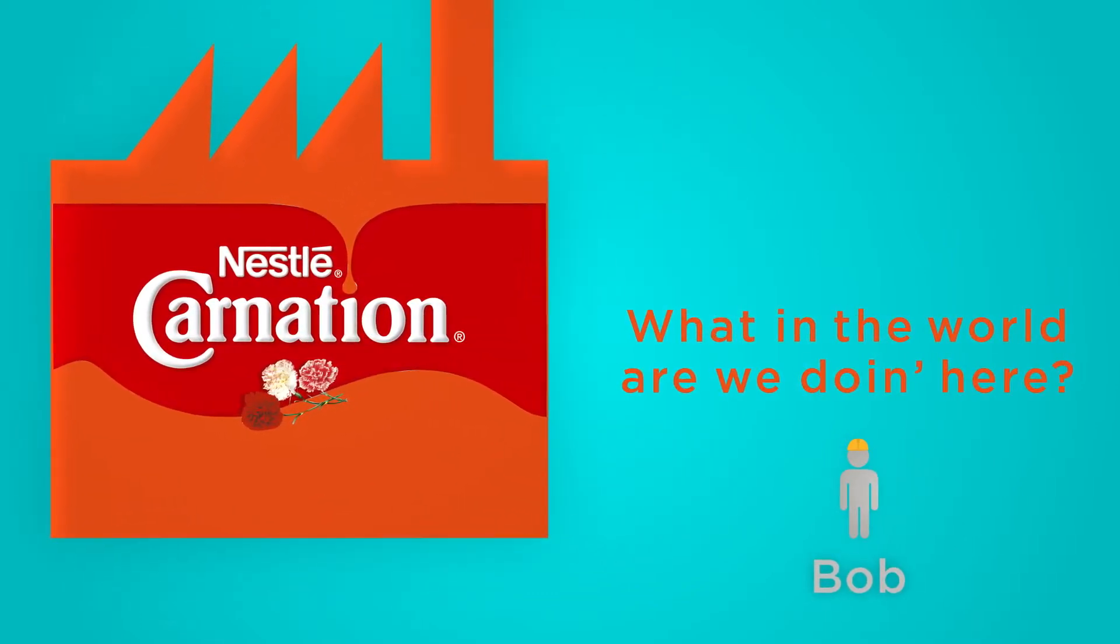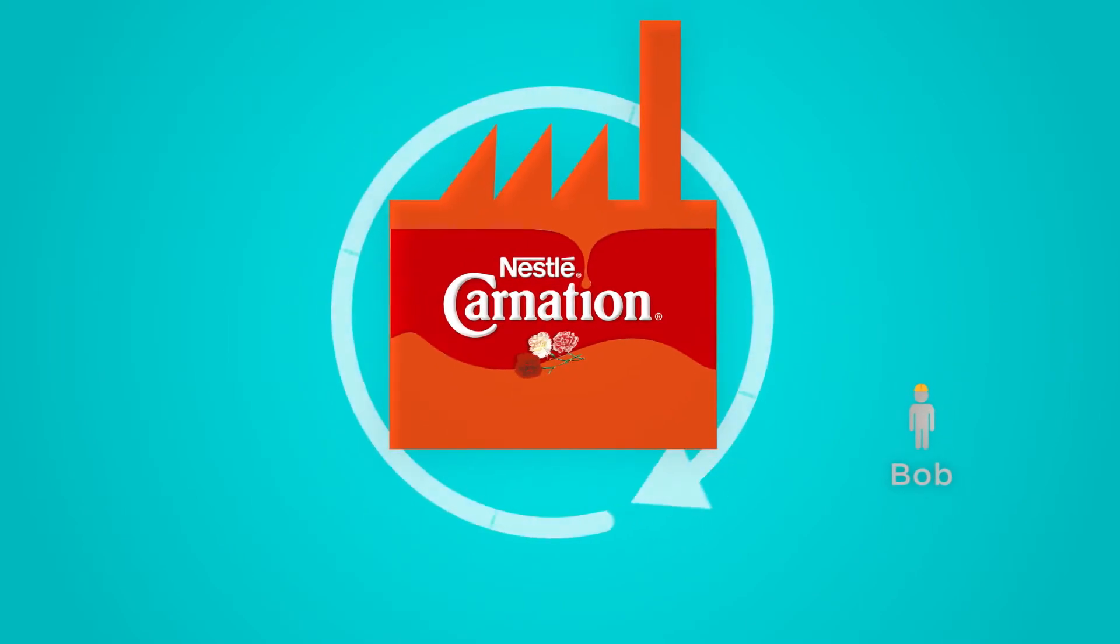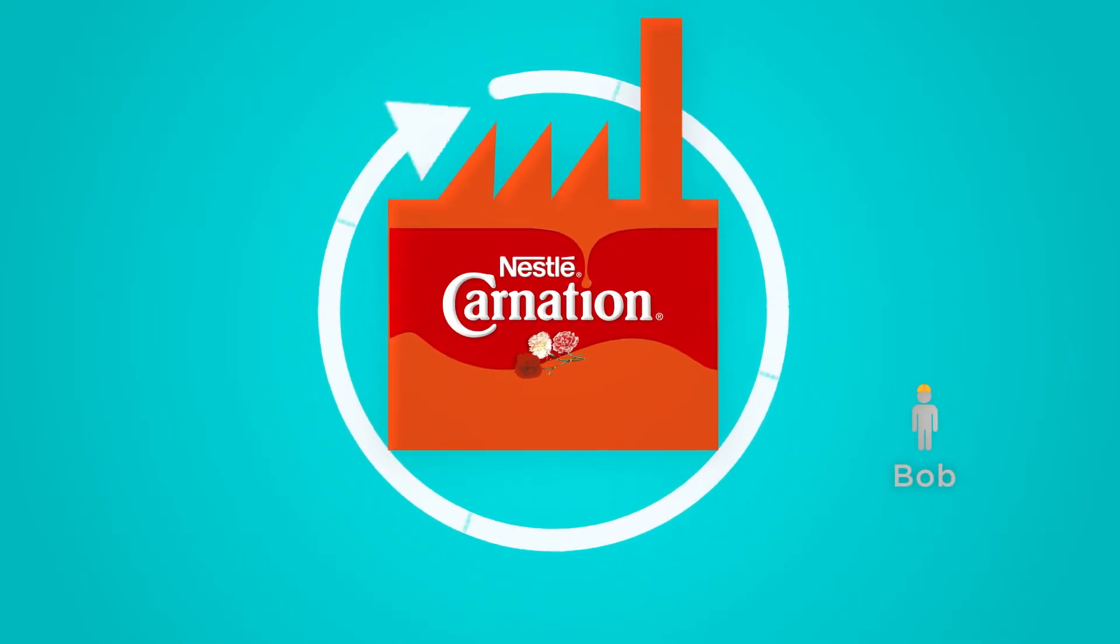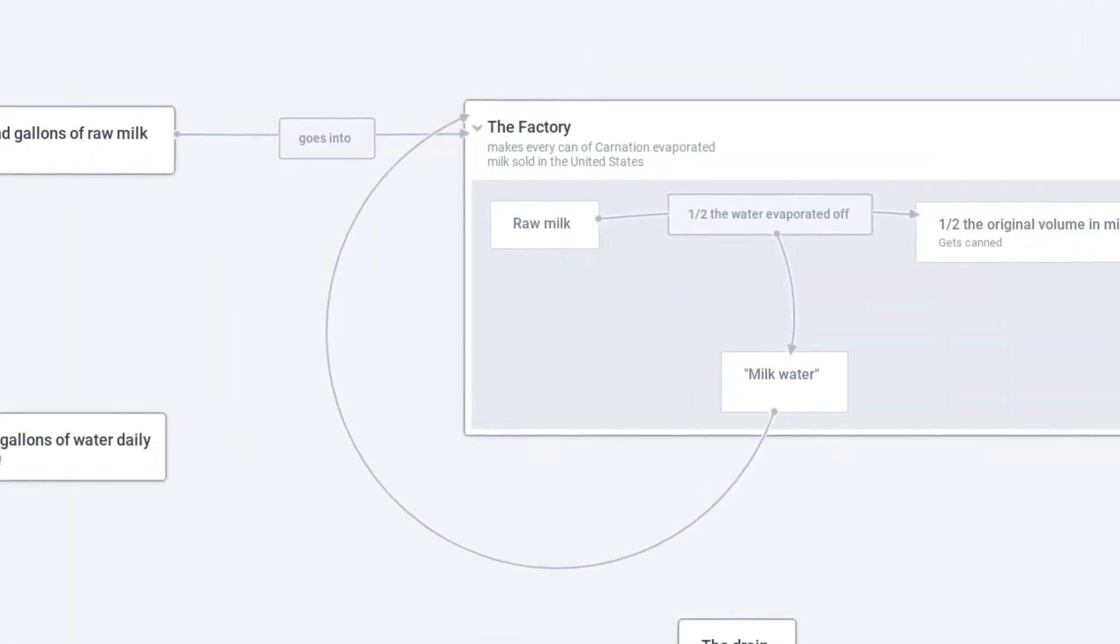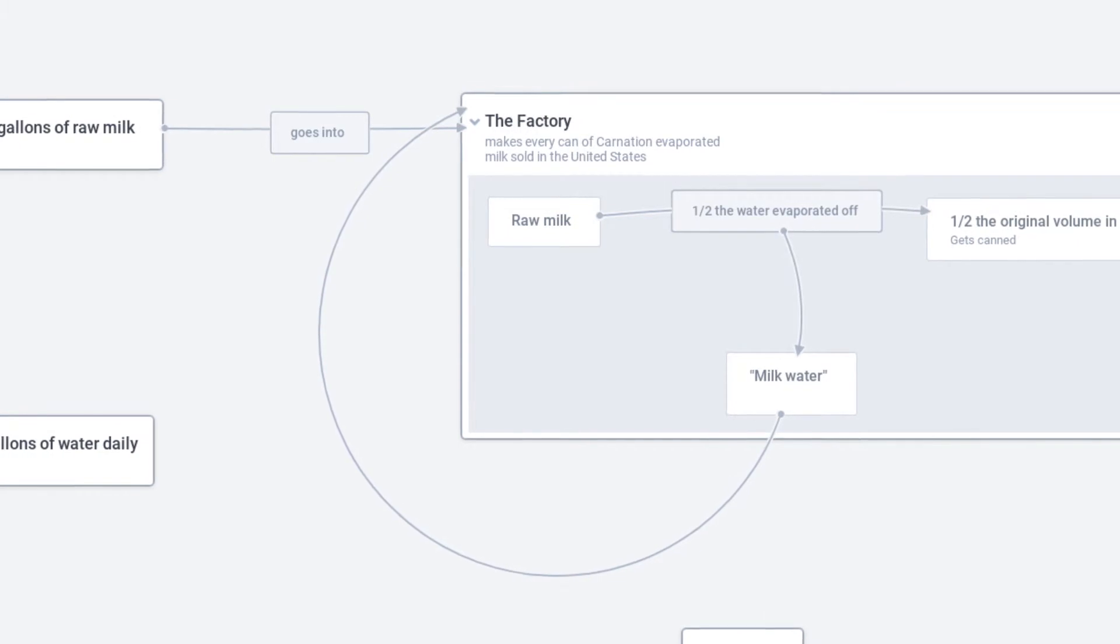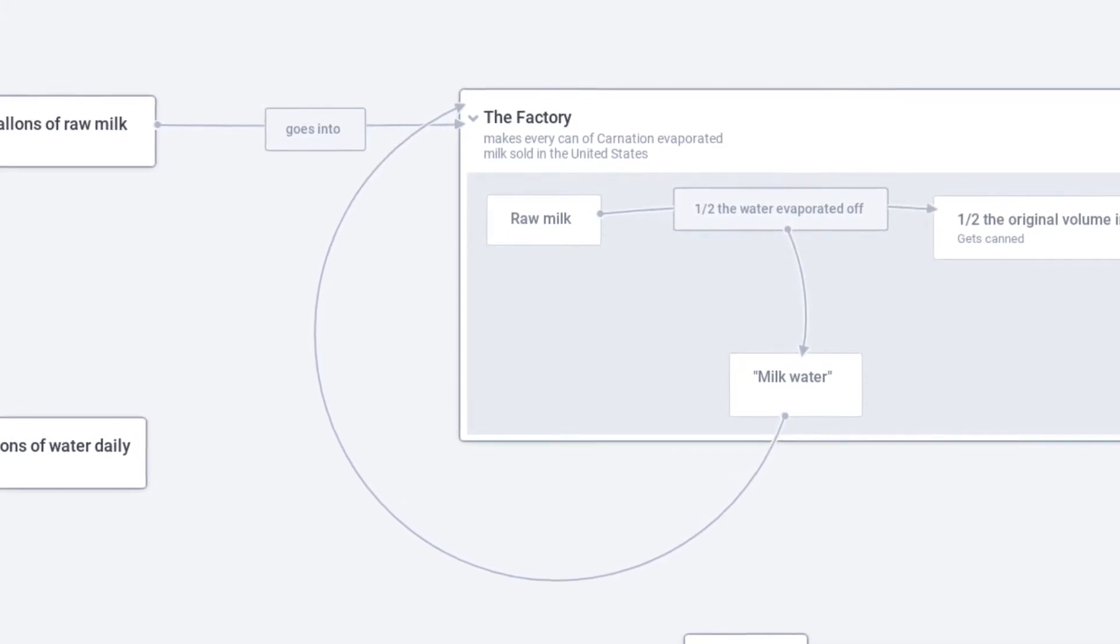That Carnation plant has now, if it hasn't become a zero water factory at this moment, it will in the next few months. They are going to use the water that they have been evaporating off the milk and throwing away to run the factory. Why not?